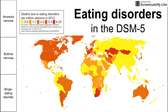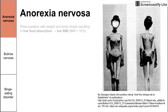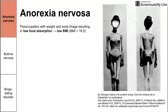Let's start with anorexia nervosa. The main premise is that a person has a preoccupation with their weight and body image, resulting in low food absorption. A person has low caloric intake resulting in a low BMI — specifically less than 18.5. There are two ways to get low caloric intake.